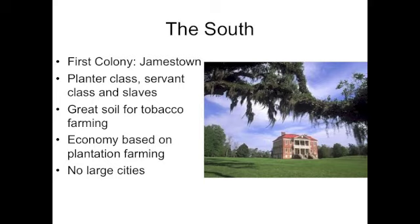The first slaves in the Americas came to Jamestown. The basis of the economy was originally tobacco farming, but they also farmed rice and indigo. The economy was based on large plantations, like the one visible in the picture to the right. There were no large cities like in the Mid-Atlantic and New England — only large plantations.